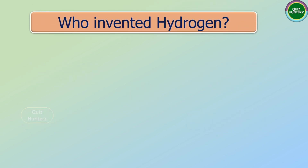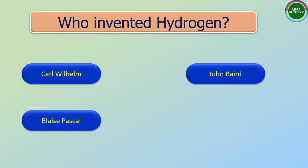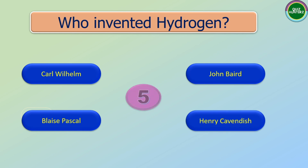Next question: Who invented hydrogen? The options are: Carl Wilhelm, John Baird, Blaise Pascal, Henry Cavendish. And the correct answer is Henry Cavendish.